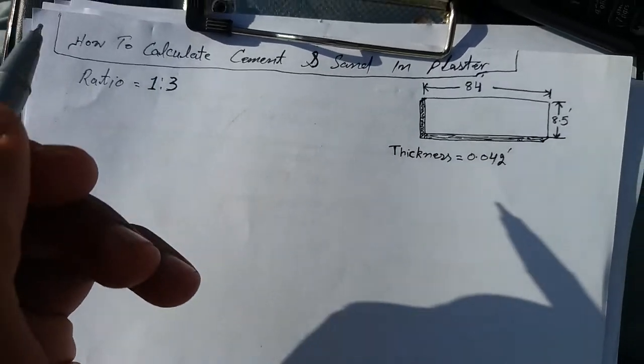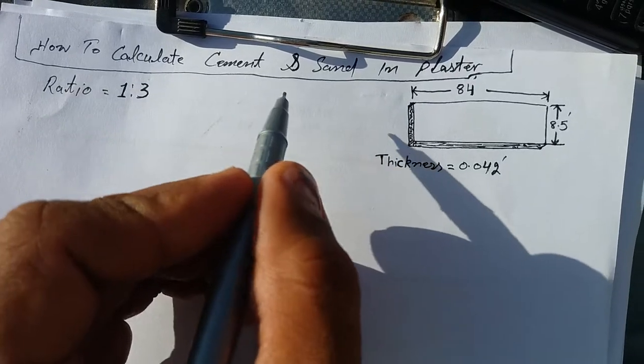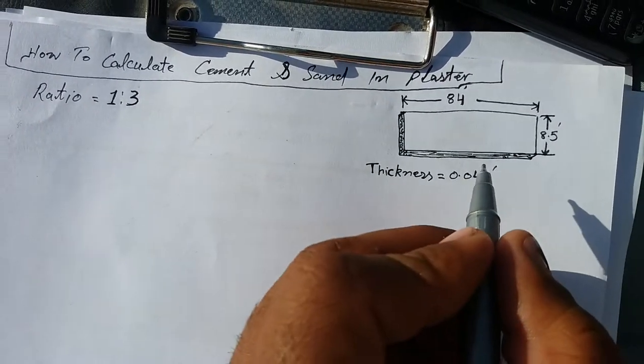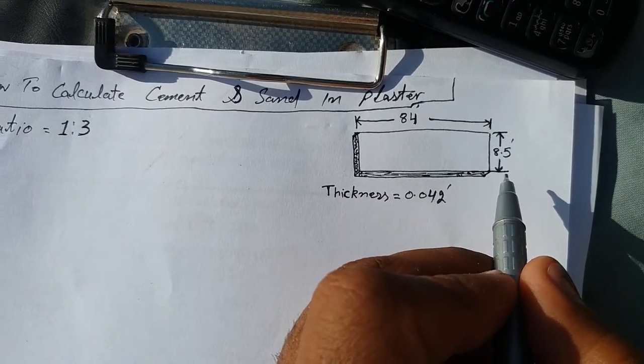Hello guys, I'm generally. In today's topic I will show you how to calculate cement and sand in plaster. We have a ratio 1:3, the wall length is 84 feet and height is 8.5 feet.